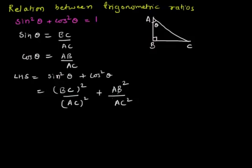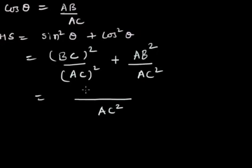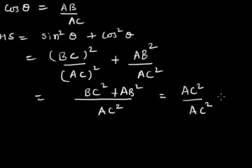For sin θ and cos θ, their squared values are written there. With AC² being common in the denominator, I can write them as (BC² + AB²)/AC². By the Pythagorean theorem, AB² + BC² = AC², so this equals AC²/AC², which gives you 1. Therefore, sin²θ + cos²θ = 1.